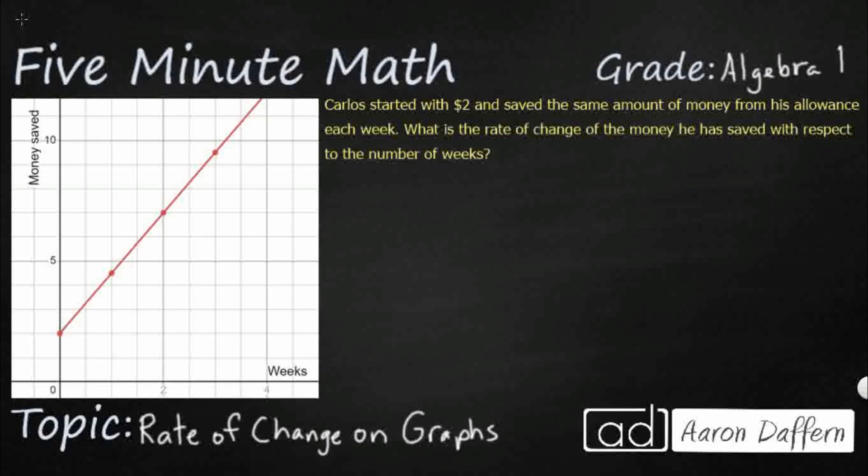So we have a word problem here, talking about Carlos. He starts with $2, and then he saves the same amount of money from his allowance each week. And so we're looking for the rate of change. We see it graphed here, so our money saved is going to be our y-axis. And you see he starts right there at $2.